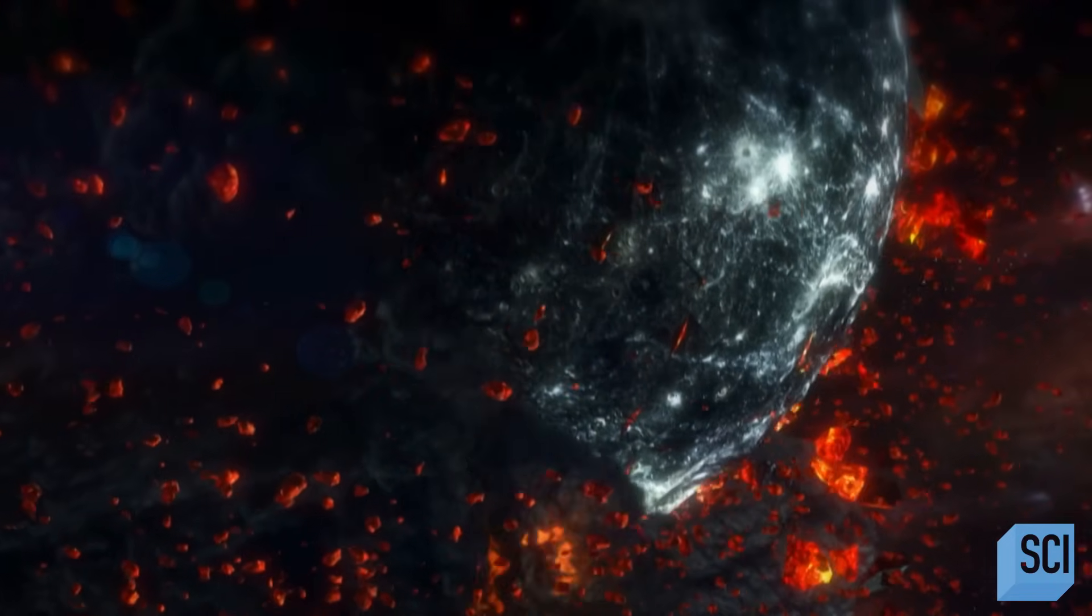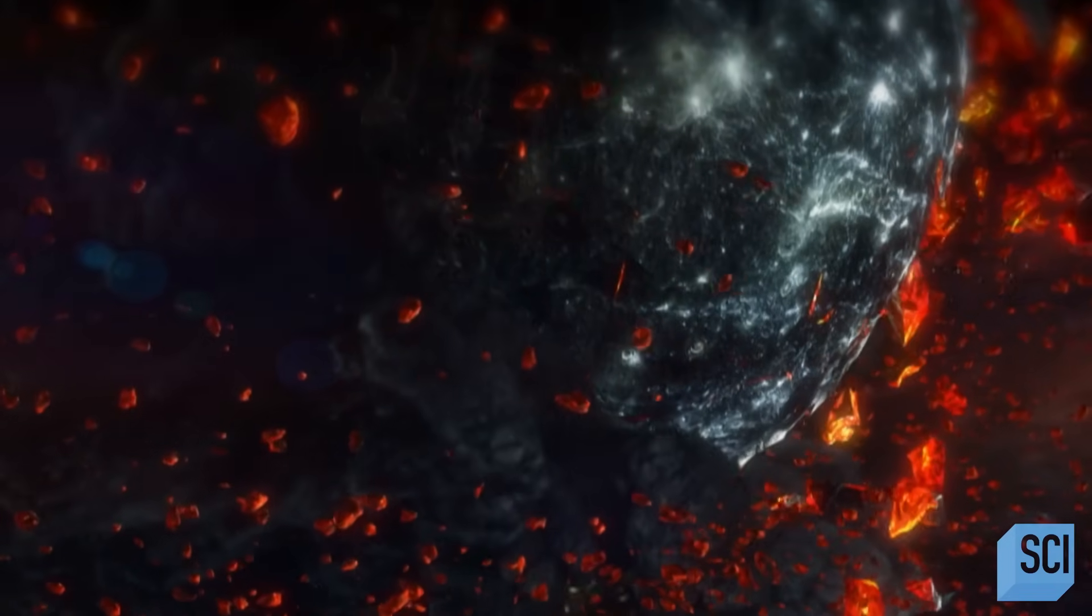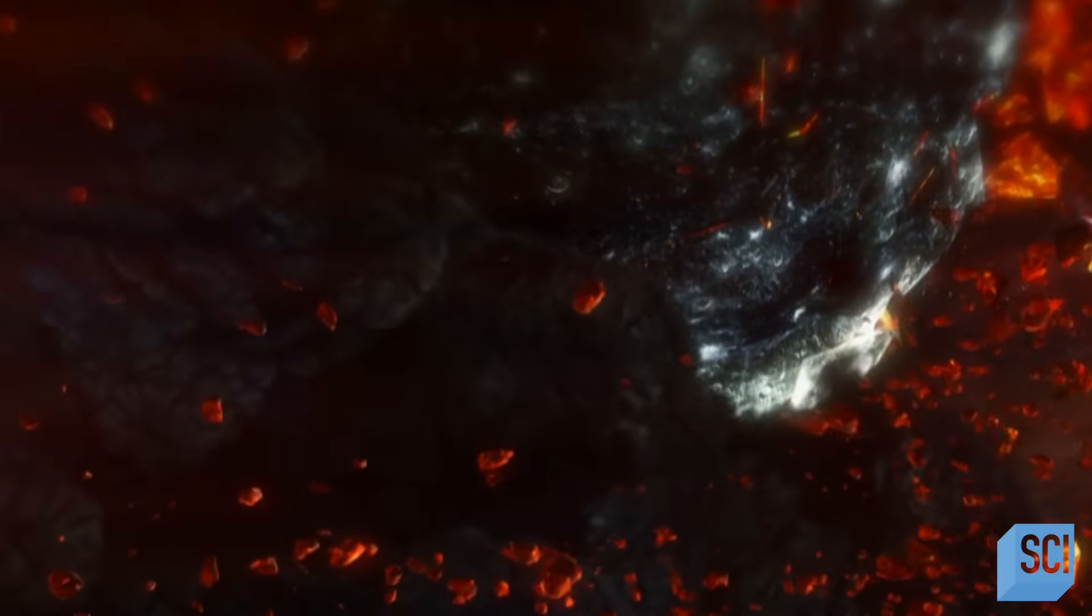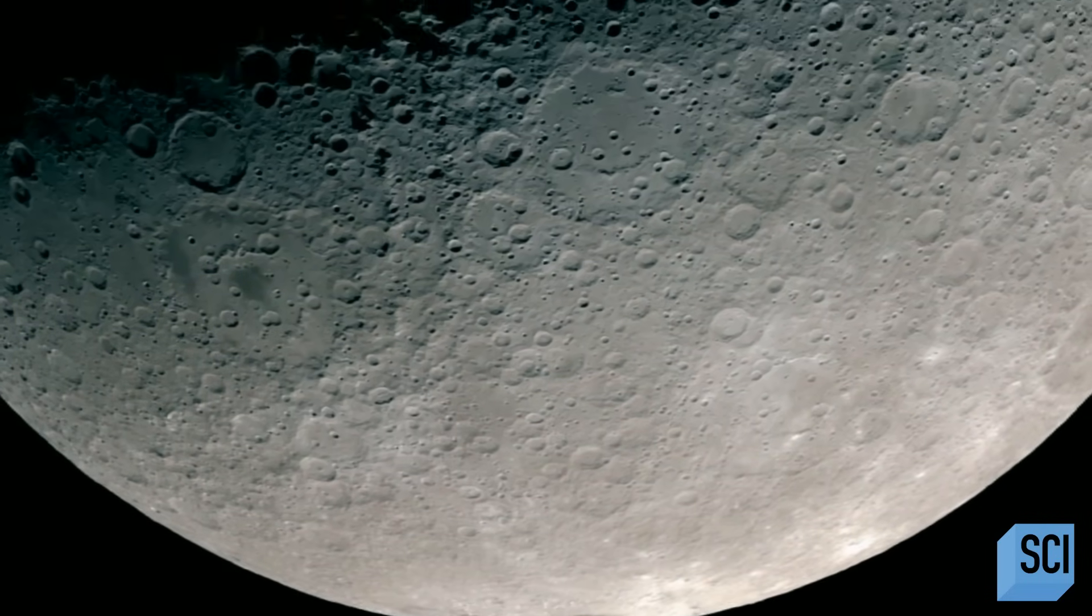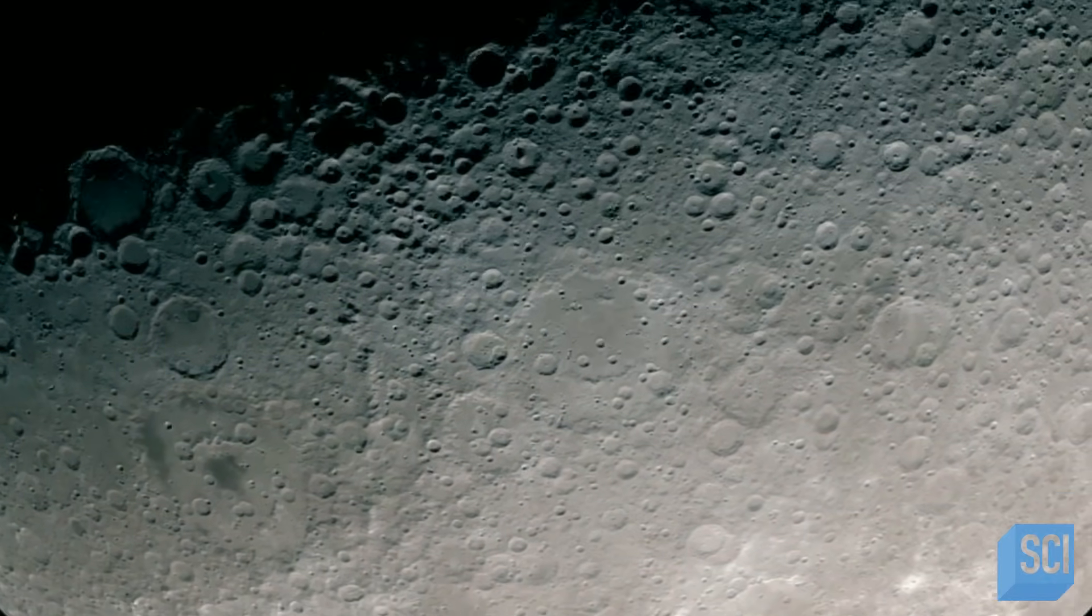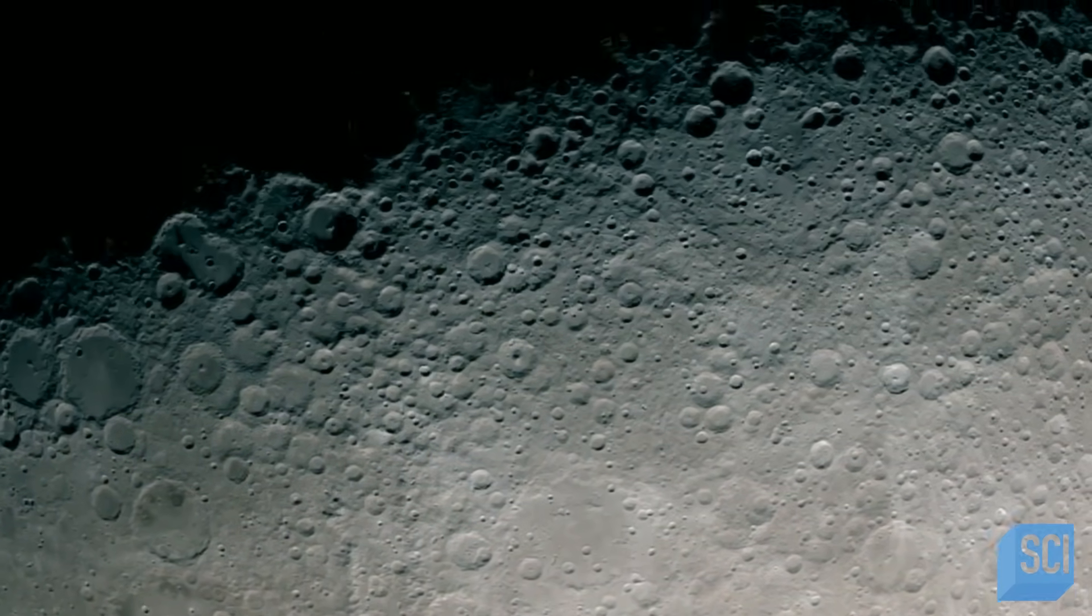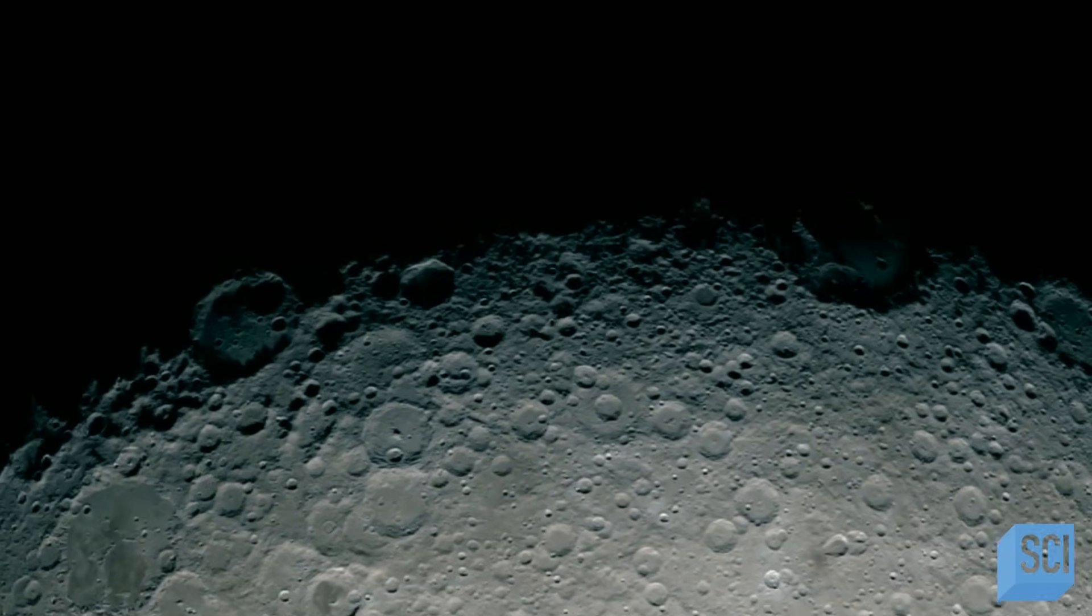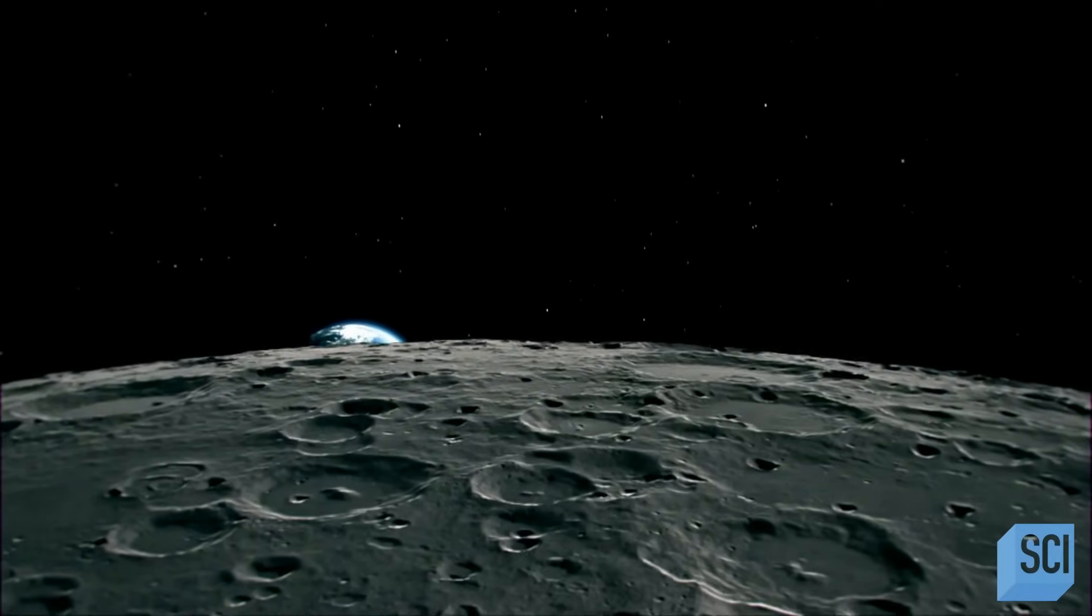So, most of the ingredients that make up the moon should have come from Thea. And that would show up today in the composition of the moon. But it doesn't. The Earth and moon are made of very similar ingredients. So, the glancing impact theory could be wrong.